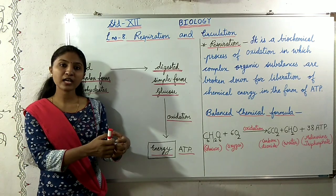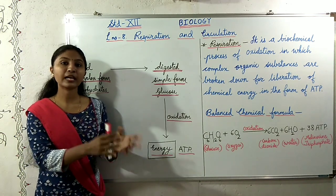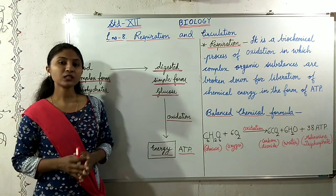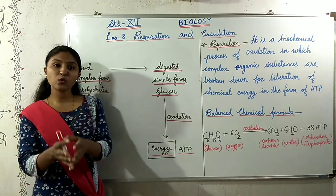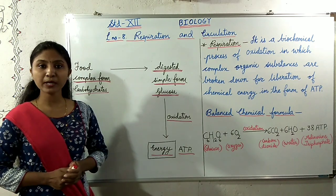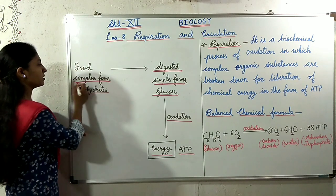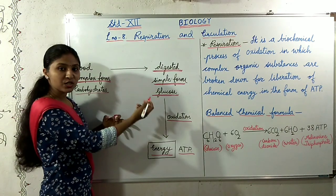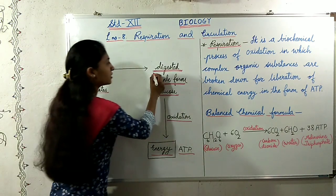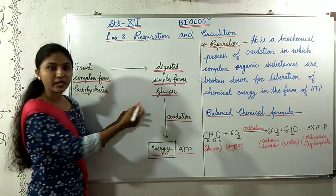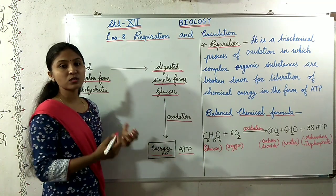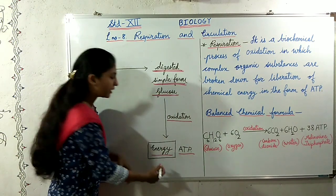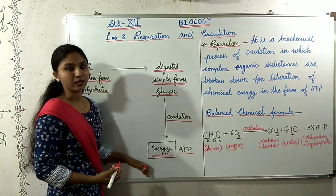Whenever herbivorous animals eat those plants they get energy from that stored food. Now as we know that food is stored in the form of complex organic substances. This complex food is digested. After consumption this complex food is broken down into simple form. This simple form is oxidized and energy is derived from it.